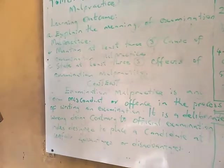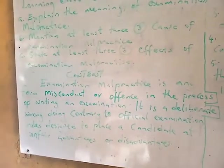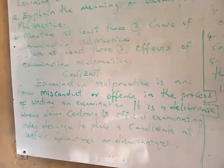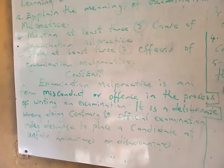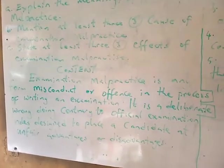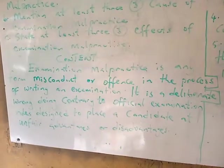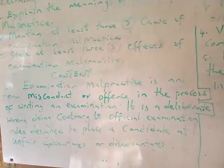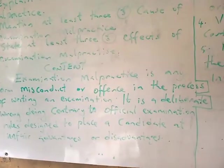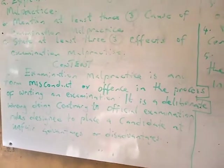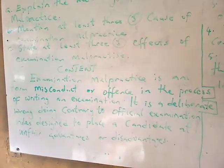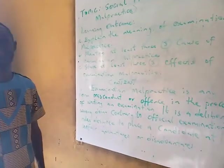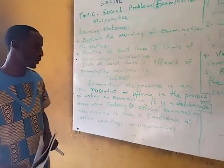What is examination malpractice? Examination malpractice is any form of misconduct or offense in the process of writing an examination. We have all written examinations — in primary school, in nursery school — so any form of misconduct, any irregularity that is an offense and is done deliberately in the process of writing an examination is called examination malpractice.